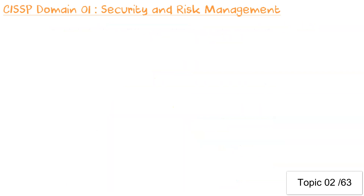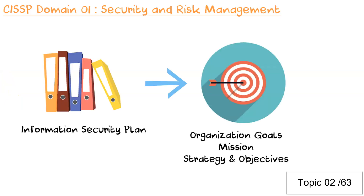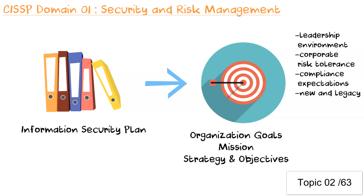Security functions such as security plan and strategy should be in alignment with the organization's business strategy, goals, mission, and objectives. With this, information security must consider other factors to achieve goals such as leadership environment, corporate risk tolerance, compliance expectations, new and legacy technologies and practices, and evolving threats. The principles of information security application should enable the organization to perform its mission efficiently and effectively with an acceptable level of risk.